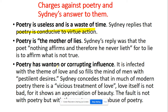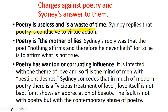Third, Gosson charged that poetry has a wanton or corrupting influence — it is infected with the theme of love and fills the minds of men with pestilent desires. Sidney concedes that in much of modern poetry there is a vicious treatment of love. However, love itself is not bad, but shows an appreciation of beauty. The fault is not with poetry but with the contemporary abuse of poetry.